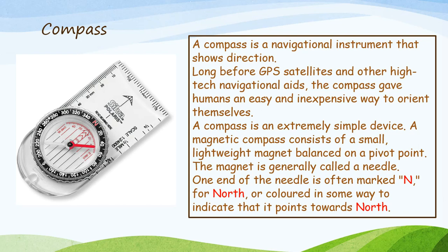What other tools do geographers use? A compass is a navigational instrument that shows direction. Long before GPS satellites and other high-tech navigational aids, the compass gave humans an easy and inexpensive way to orient themselves. A magnetic compass consists of a small, lightweight magnet balanced on a pivot point, generally called a needle. One end of the needle is often marked N for North or coloured to indicate that it points towards North. On our compass here, you've got a coloured needle and a red arrow with the red N to indicate North.